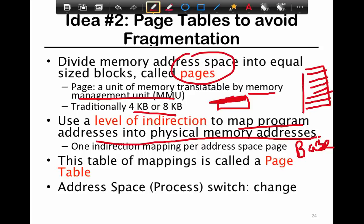This mapping between the virtual page number to the physical page number — you have some number of mappings for every application, and this mapping needs to be stored somewhere. The overall table or collection of mappings is what is called a page table, and every process has a page table. So every process in your system has its own page table.